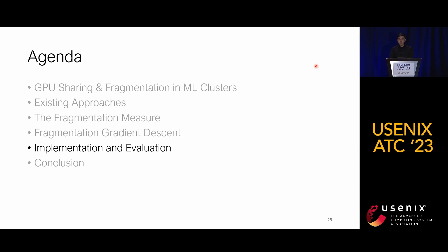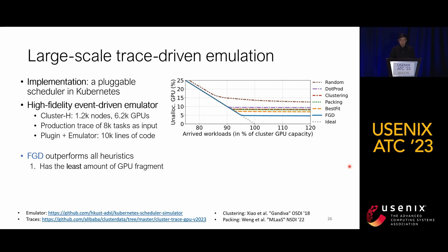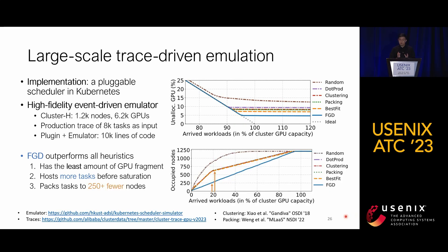We implemented the fragmentation-based scheduler as a pluggable component in Kubernetes, leveraging the scheduling framework. We also released a high-fidelity event-driven trace emulator that can replay collected traces — it is open-sourced — and can also control a real Kubernetes cluster. The traces come from Alibaba Group. We find FGD outperforms all heuristics from many perspectives: it achieves the least GPU fragmentation, and the upper figure shows unallocated GPUs during scheduling where FGD can host more workloads before reaching saturation. The lower figure shows FGD packs the same group of tasks onto 250 fewer nodes.